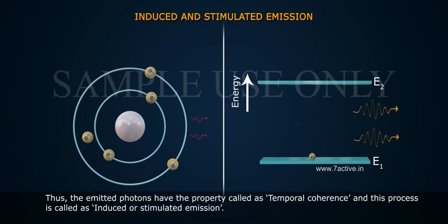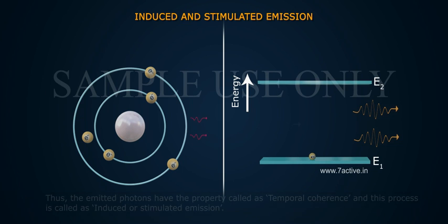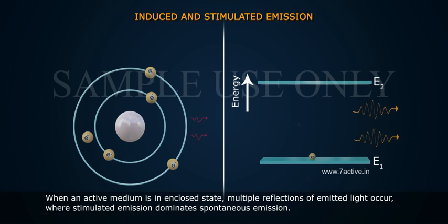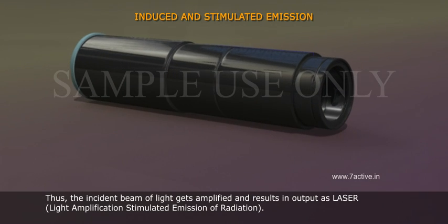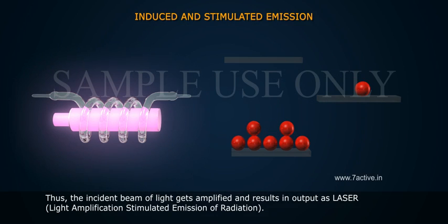When an active medium is in enclosed state, multiple reflections of emitted light occurs, where stimulated emission dominates spontaneous emission. Thus, the incident beam of light gets amplified and results in output as laser light amplification stimulated emission of radiation.